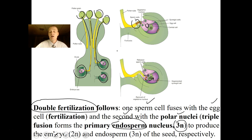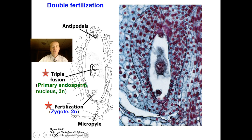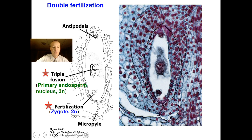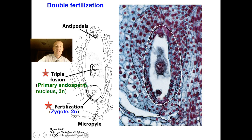Egg plus sperm equals zygote — that forms the next plant generation. The polar nuclei plus a sperm cell forms the endosperm, which is a food supply for the growing embryo. This is the structure the sperm cells are moving towards: one sperm cell fertilizes the egg cell forming a zygote, and the polar nuclei fuse with another sperm cell forming that triploid endosperm.